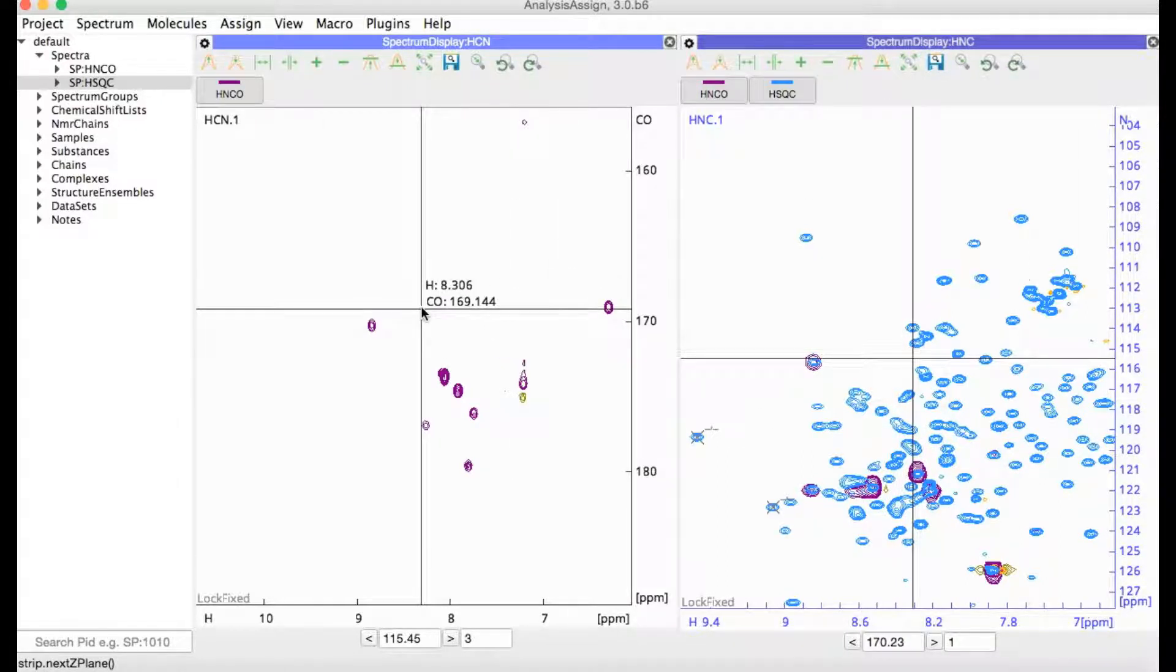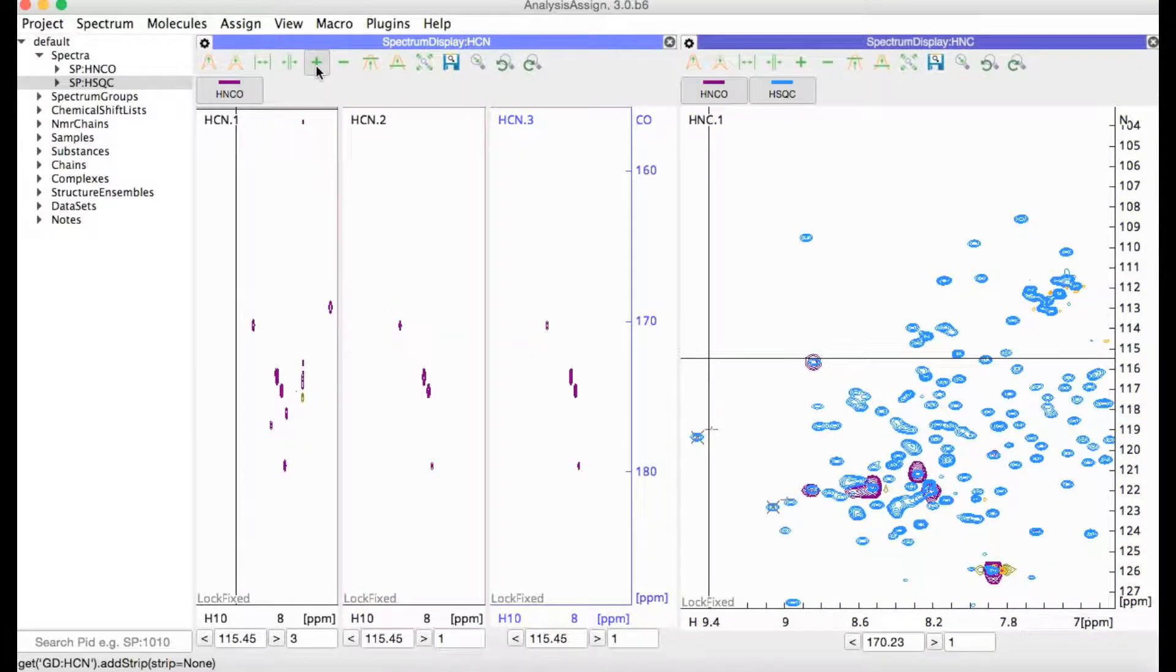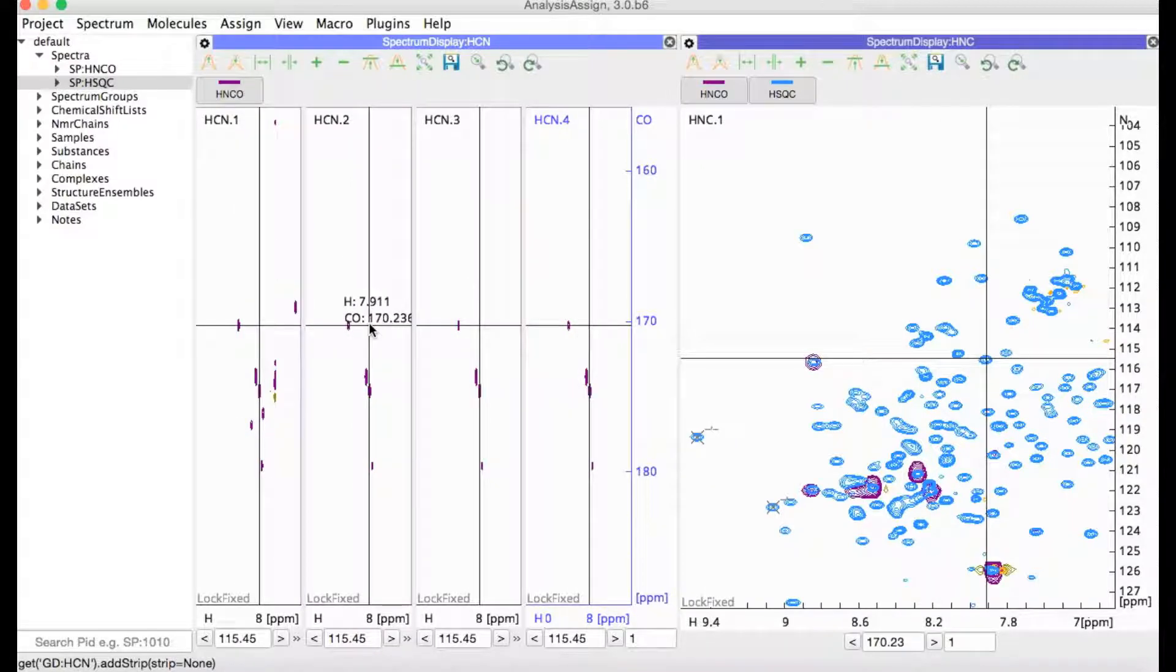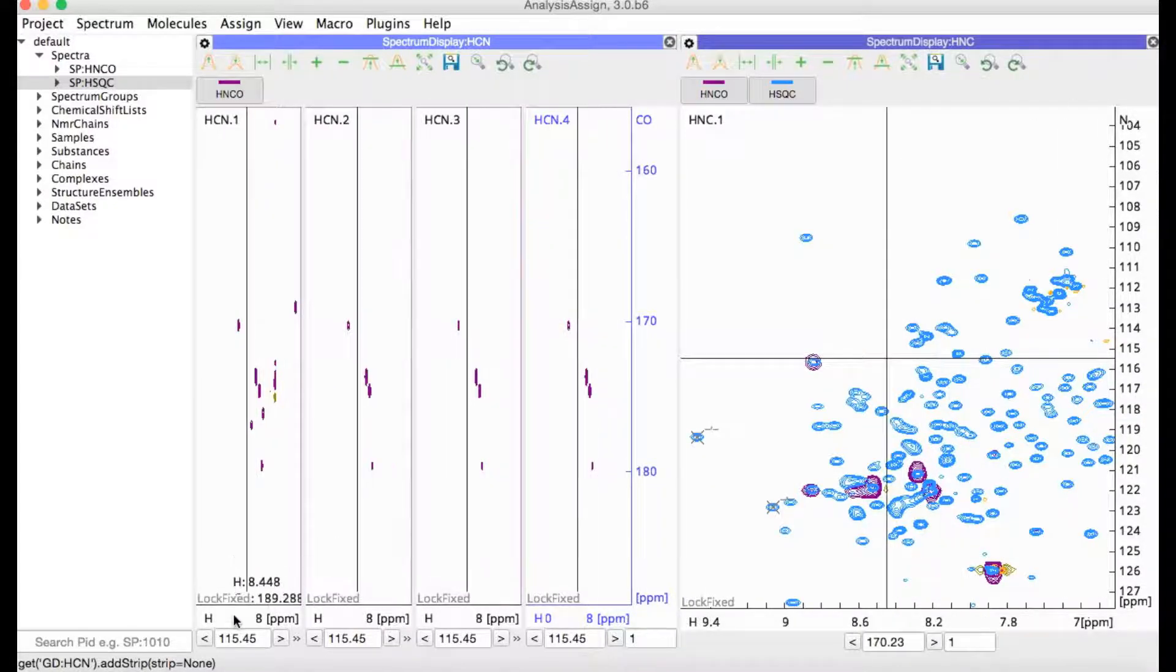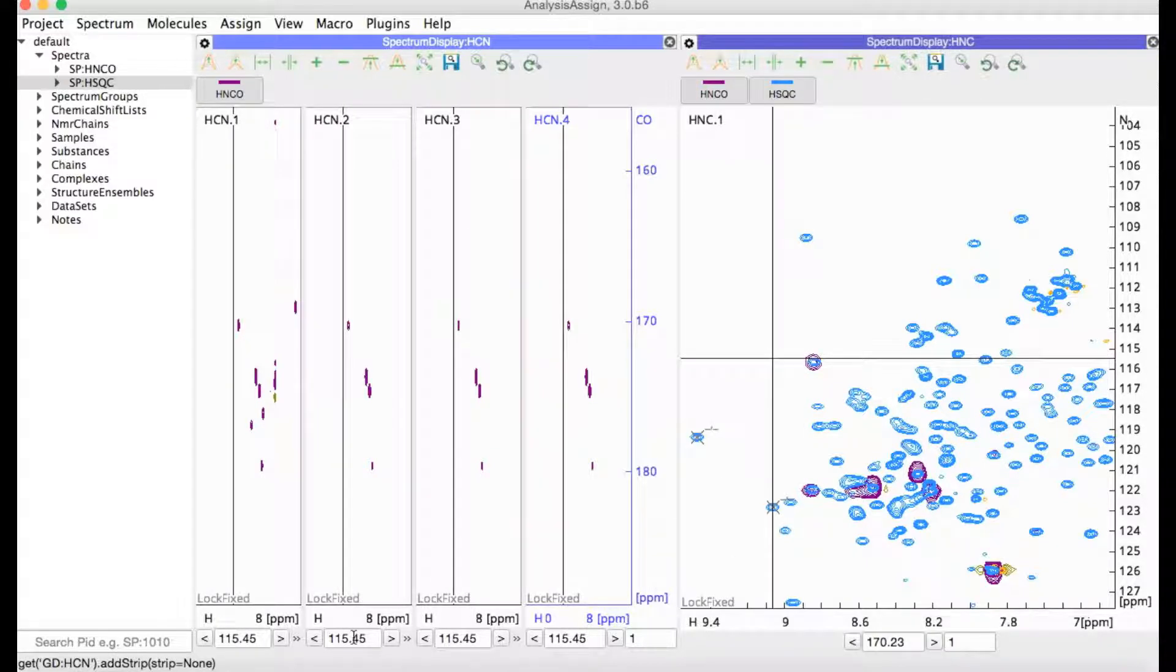You can add strips to one of these displays simply by pressing the plus button in the toolbar. This will add strips to the display. You can see that the proton and nitrogen dimensions each have the capacity to have their own values.